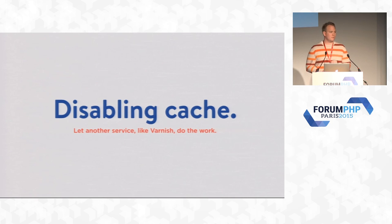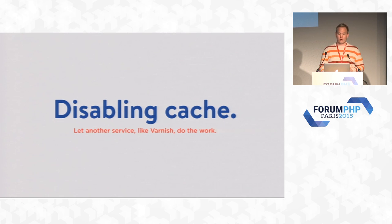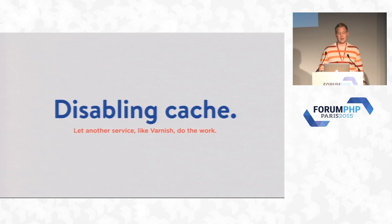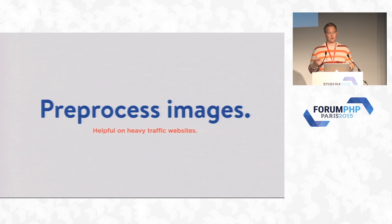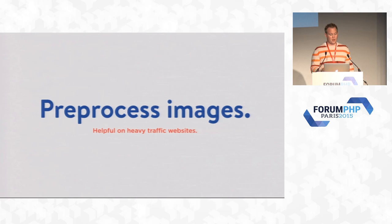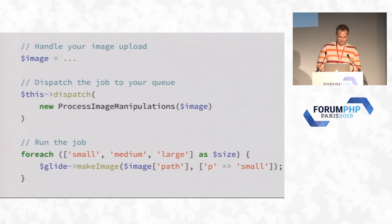Some people ask about disabling cache because they want to use Varnish instead — you can disable Glide's cache and let Varnish or another caching mechanism handle it. Another thing I was going to cover is pre-processing images, which is helpful in heavier environments — you can use Glide with a queuing system to pre-cache popular sizes. I'll throw the slides up on Joind.in so you can find those. That's all I have — thanks for coming to my talk.